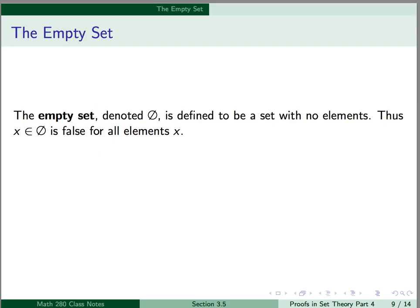For the last part of this section, we're going to talk a little bit about the empty set. The empty set, denoted as a circle with a slash through it, is defined to be a set with no elements. So x is an element of the empty set is false for all elements x. The empty set is really just a convenient notation — it's not strictly speaking a set in the traditional sense, but it's more of a notation that's convenient to use.